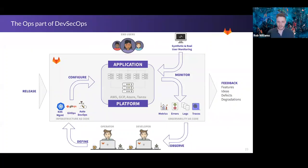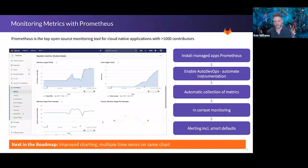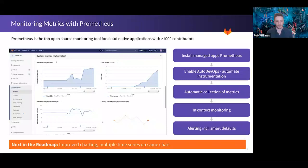GitLab offers managed apps that integrate your application platform with version control and merge requests. The first is Prometheus — an open source monitoring and alerting toolkit originally built by SoundCloud, now the second hosted project in the Cloud Native Computing Foundation after Kubernetes. By utilizing this managed app, we enable automated collection and reporting of system metrics for each application deployed within the cluster directly within GitLab, so you have context between your source code and your metrics.